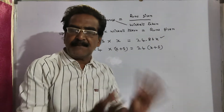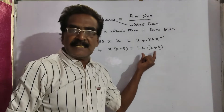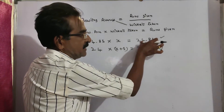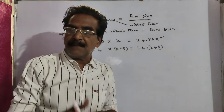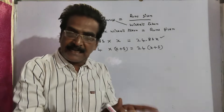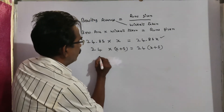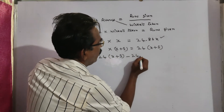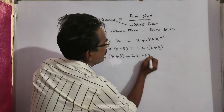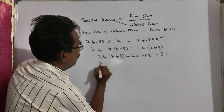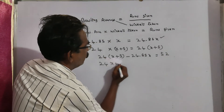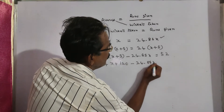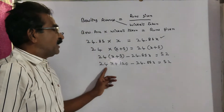The number of runs given by him up to the last match is 24.85x, and up to the present match is 24(x + 5). Subtracting these gives the runs in the current match, which equals 52. So: 24(x + 5) minus 24.85x equals 52, giving 24x plus 120 minus 24.85x equals 52.